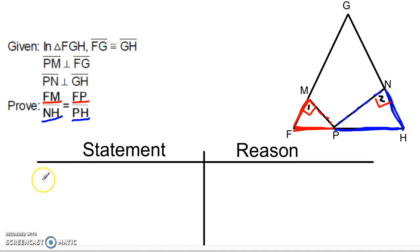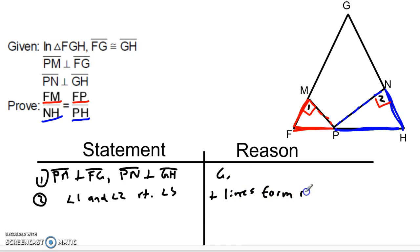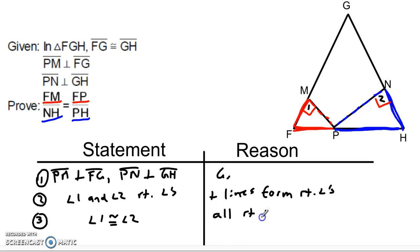Let's go ahead and write that up. We have PM perpendicular to FG; we also have PN perpendicular to GH — that's given. Perpendicular lines give me right angles, which means angle 1 and angle 2 are both right angles. Remember, you always want to state that angles are right angles before you say that they're congruent, because perpendicular lines form right angles. And then in the third step, angle 1 is congruent to angle 2, because all right angles are congruent. So now in step 3, we have one pair of corresponding angles congruent in these triangles.